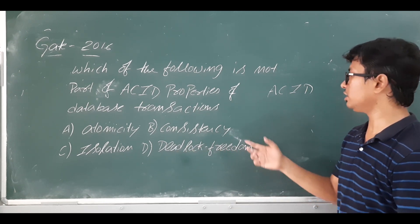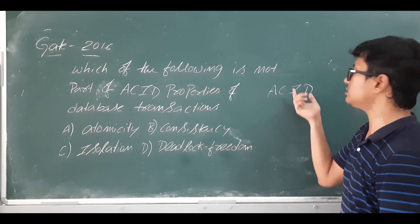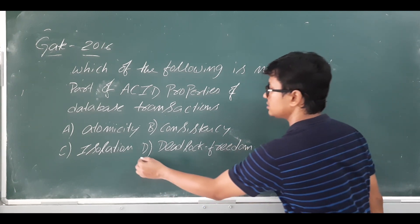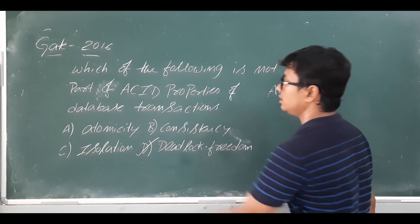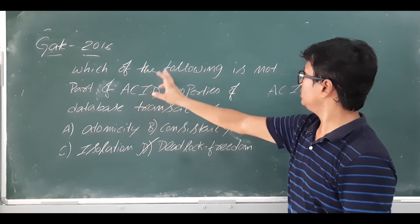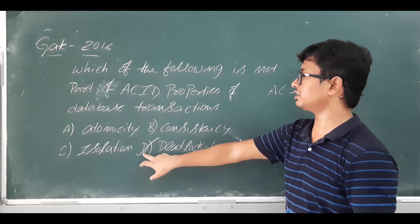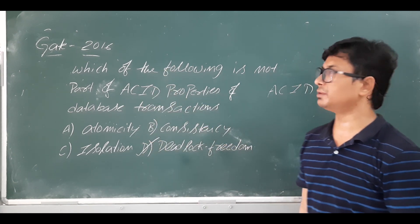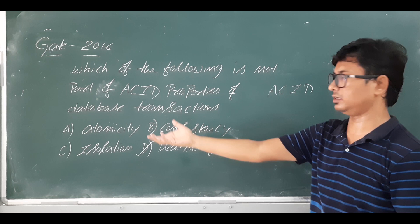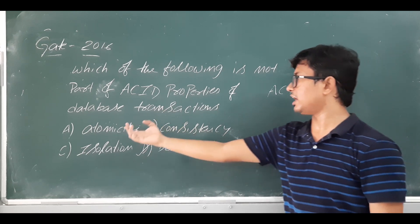D is not deadlock freedom — it is durability. So deadlock freedom is not a correct ACID property. Therefore, option D is the right answer to this question, because they have asked which option is NOT part of the ACID properties.